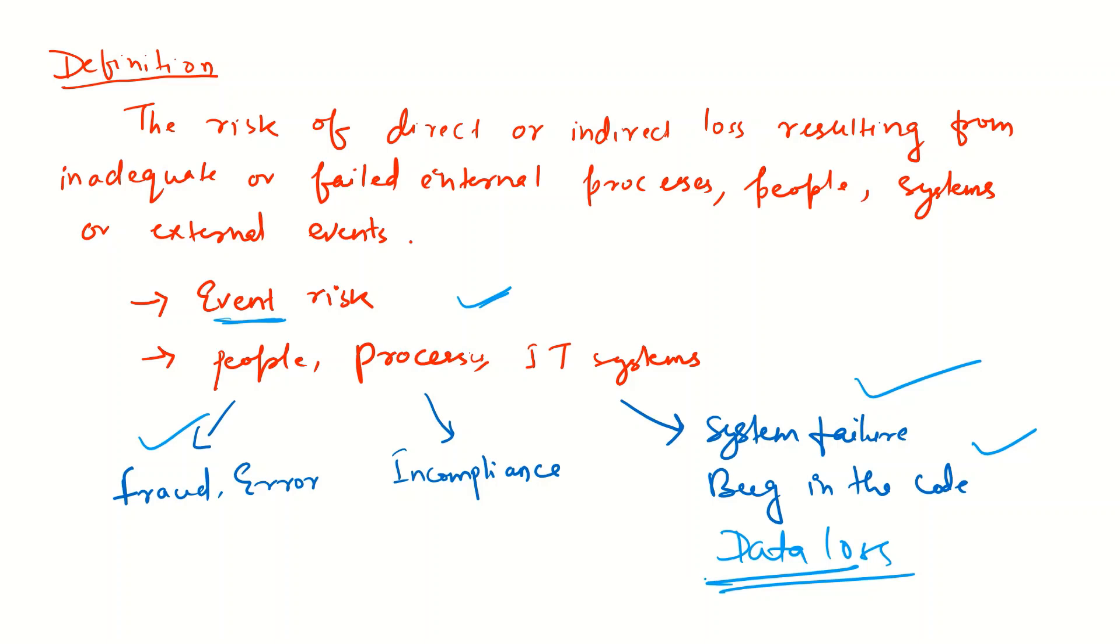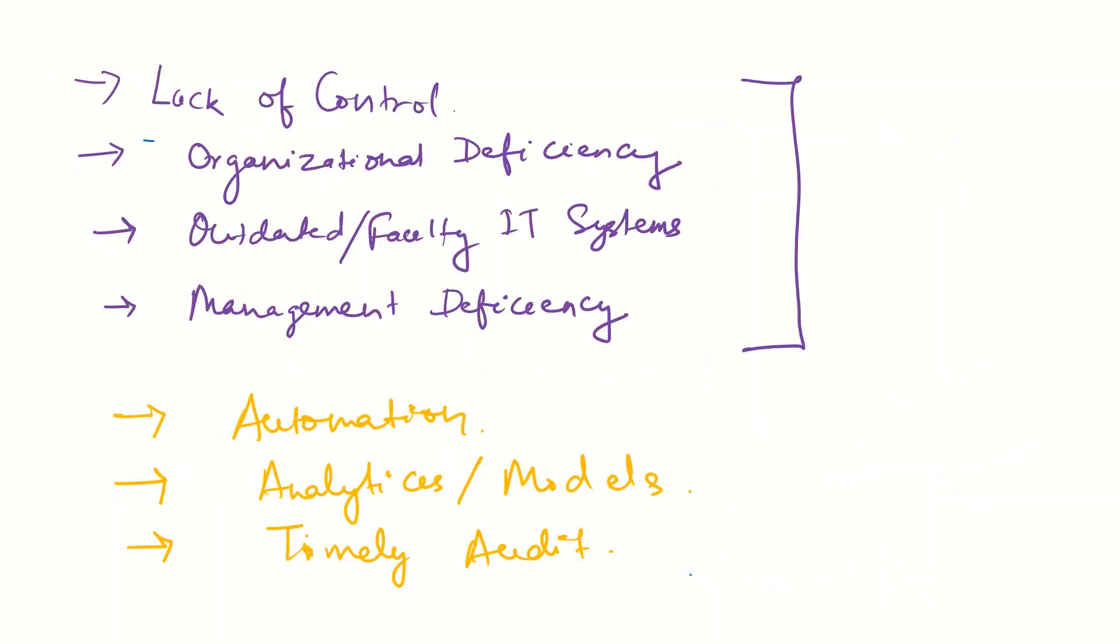It's the loss due to operational incidents. So why does this happen? Operational risk can be controlled by many ways, but first we need to understand why operational risk incidents happen. It's because of lack of control.